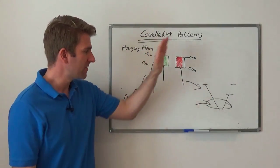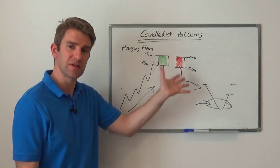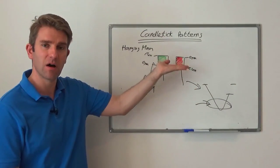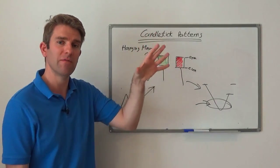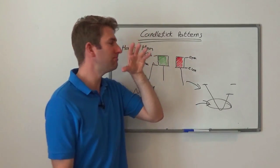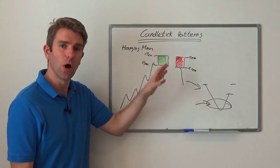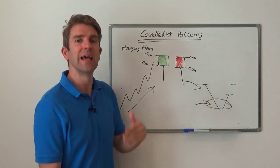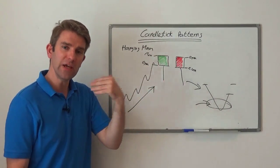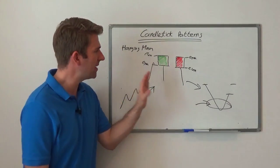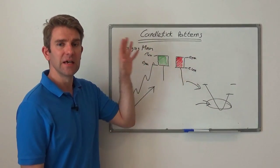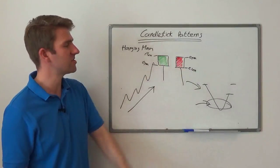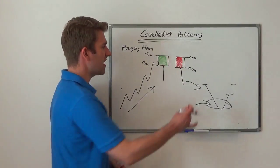The sell-off has happened, sellers have come in. Yes, the buyers have overcome it and pushed it back to highs, giving you that classical pattern shape. However, the presence of those sellers initially is enough to say, hey, we could be at the top here, we could be reversing. That sell-off may be the start of something bigger.